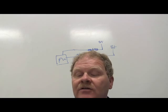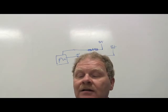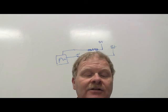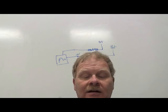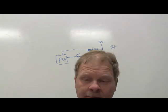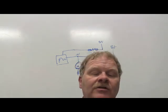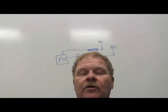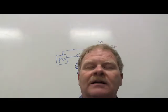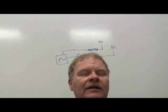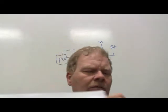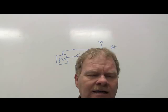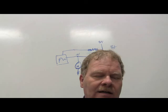Name the components that should be visually inspected before attempting to test a BCM control system: sensors, electrical connections, ground connections, wiring, and all vacuum hoses. You want to make sure you've done all your homework as much as possible before you replace anything.